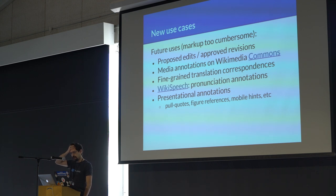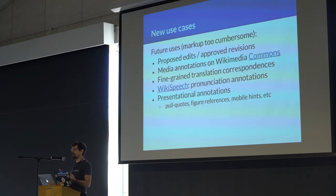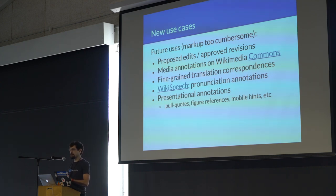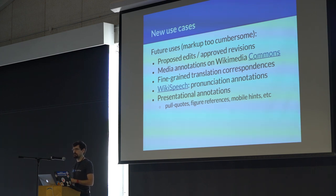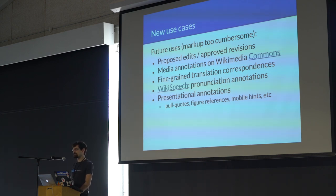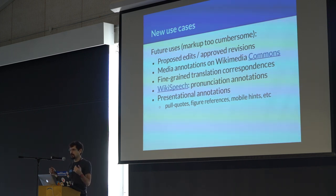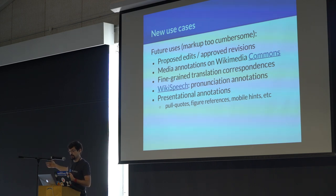There are also new use cases we'd like to pursue where we're constrained by the visibility of the annotation in the source document or just by the overhead. Currently all our annotations are ad hoc, done in different ways, and that imposes a big barrier to entry for new stuff. For example, we'd like to use annotations to represent proposed edits or approved revisions. We have a project currently underway to do media annotations on Wikimedia Commons with rich file formats — images, video, audio. There are fine-grained translation correspondences: an article in Spanish Wikipedia is not generally a straight translation of the English Wikipedia article, but there might be certain sections translated from one to the other, and we'd like to maintain those correspondences and use them to train machine translation tools.